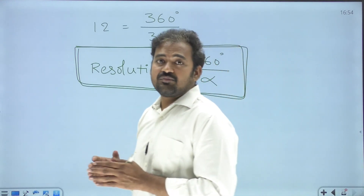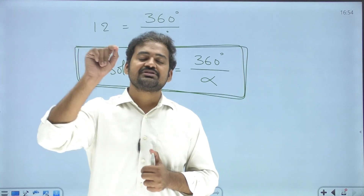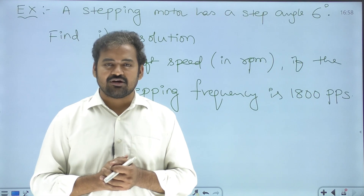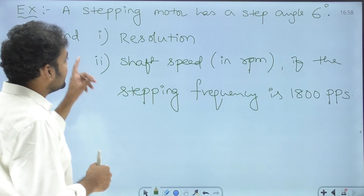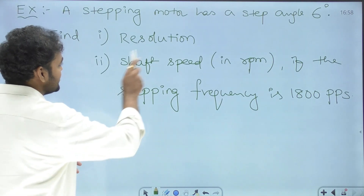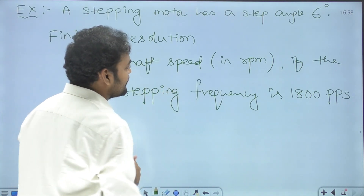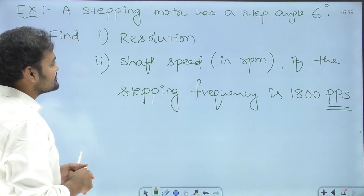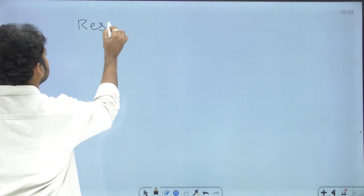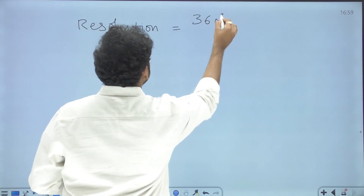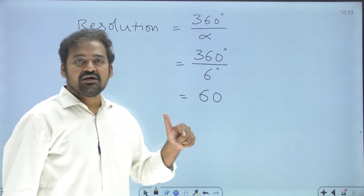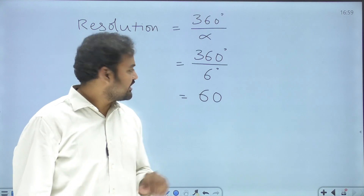Resolution is the number of steps required for the rotor to complete 360 degrees exactly. Now based on the knowledge we gained, let us answer a sample question: A stepping motor has a step angle of 6 degrees. Find the resolution and the shaft speed in RPM if the stepping frequency is 1800 pulses per second (PPS). Resolution = 360° / 6° = 60. That means 60 steps are required to complete one revolution.